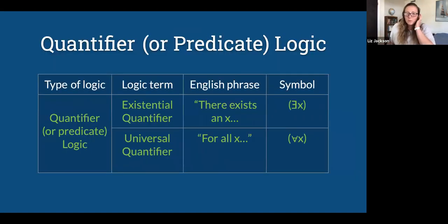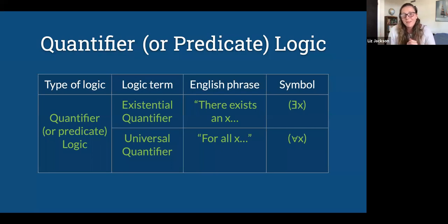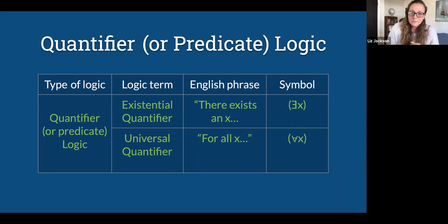That was a basic summary of the valid argument forms for propositional logic. There is more, but that covers the main ones. Now I want to give a very basic overview of two other kinds of logic. The first is quantifier or predicate logic, and then we'll talk a tiny bit about modal logic. Modal logic is the logic of possibility and necessity. Quantifier logic is about existence and making claims about groups as a whole — you're quantifying over objects.